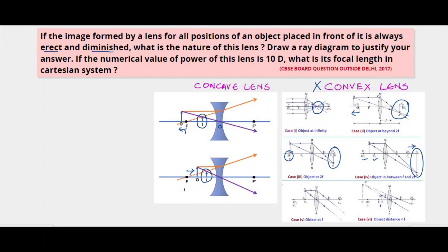This is also a diminished and an erect image. So we see that it is for a concave lens that the image formed is always erect and diminished. So our correct answer is concave lens.